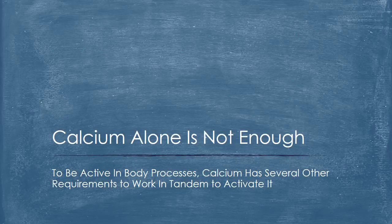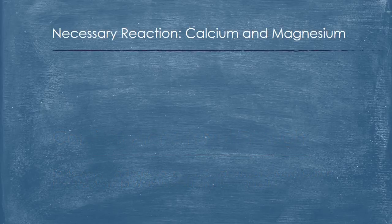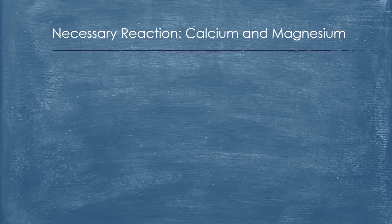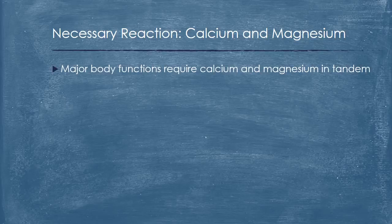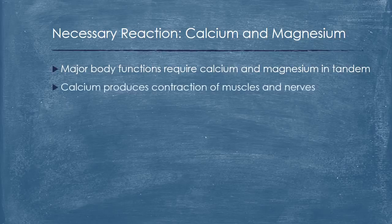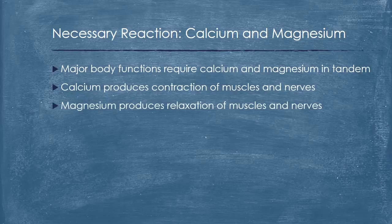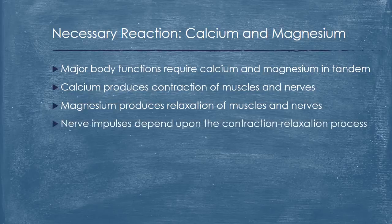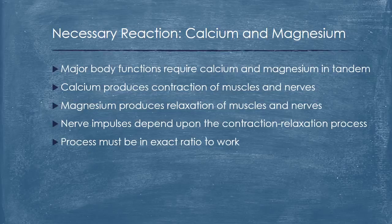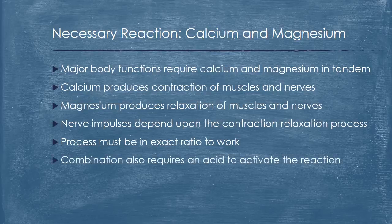Calcium alone is not enough. To be active in body processes, calcium has several other requirements to work in tandem to activate it. Calcium has a mineral counterpart in magnesium, and there is a necessary reaction between the two for either to be useful. Major body functions require calcium and magnesium working in tandem: calcium produces contraction of muscles and nerves while magnesium produces relaxation. Nerve impulses depend upon this contraction-relaxation process. The process must occur in an exact ratio, and the combination of calcium and magnesium in correct ratio also requires an acid to activate the reaction between the two.